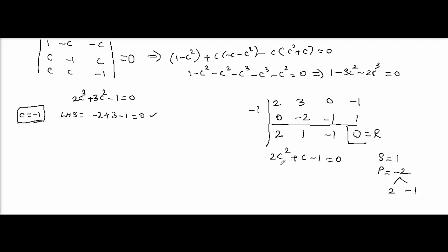So 2 and minus 1. The other root, change the sign and divide by 2, so you get 1 by 2. So the values of c are c equal to minus 1, minus 1, 1 by 2. These are the values of c.